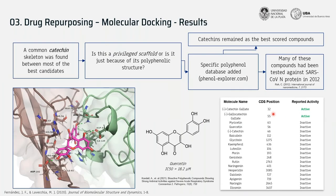Molecular docking results showed a common catechin skeleton among most of the best candidates. We wondered whether this was a privileged scaffold or simply due to non-specific polyphenolic interactions at the interface. To answer this, we added a specific polyphenol database and ran docking again, observing that catechins remained the best-scored compounds among all polyphenols. We also found that many of these compounds had already been tested against SARS-CoV in 2012, with very good correlation between their reported activity and our consensus docking score.